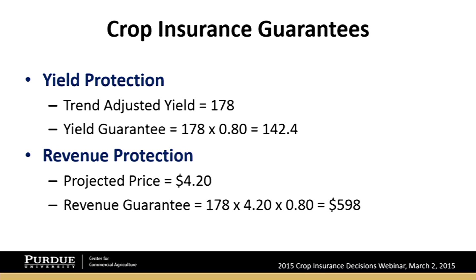Thinking about last year, the projected price was $4.62, giving a revenue guarantee a little under $700 per acre. That's a pretty big drop in revenue guarantee at the same 80% coverage level. One way to get some of that back is to think about boosting coverage to the 85% level.